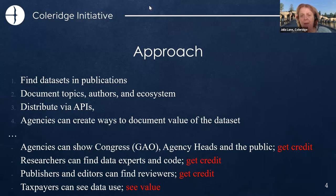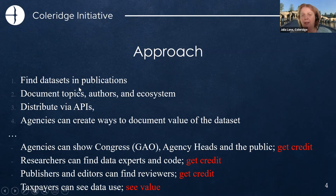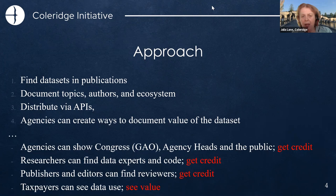The vision was to create an Amazon.com for data. You go into Amazon and say you want books on a particular topic, and it shows you the books and authors to look at. The basic idea here is that datasets are hiding in plain sight. We need to find them in public documents — starting with the scientific literature. Once you've got the publication, you can find the datasets, find the authors, and build an ecosystem just like Amazon.com built an ecosystem around books. If we distributed the APIs, agencies can create ways of documenting use through visualizations.